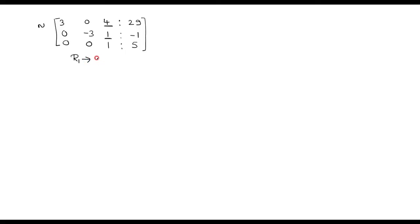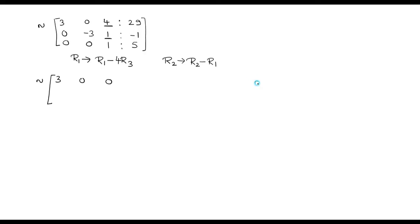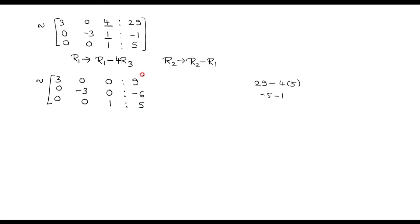R1 changes to R1 minus 4·R3, making that position 0. Similarly, R2 changes as R2 minus R3. Changing the first row: it is 3, 0, 0, and for the last element it is 29 minus 4 times 5, giving 9. For the second row: 0, minus 3, and 0, then minus 1 minus 5 gives minus 6. The third row stays 0, 0, 1, 5. This is now a diagonal matrix.